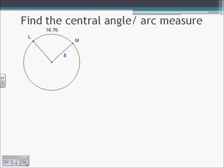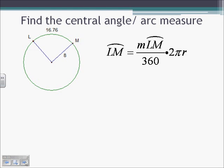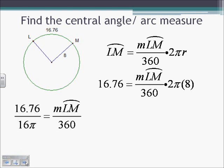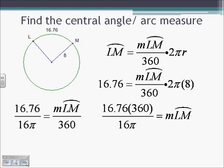Finding the central angle or arc measure given an arc length and a radius, we use the same formula. Arc length of LM equals the measure of LM over 360, times 2πR. We know the arc length is 16.76 and the radius is 8, so we're solving for the measure of that arc. Dividing both sides by 2π times 8 (which is 16π), then multiplying both sides by 360 gives: 16.76 times 360 over 16π, which is approximately 120 degrees — the measure of arc LM and also its central angle.